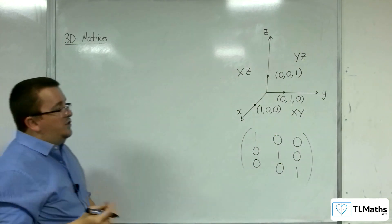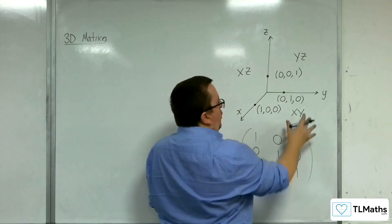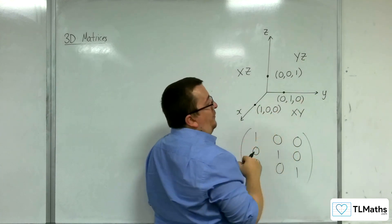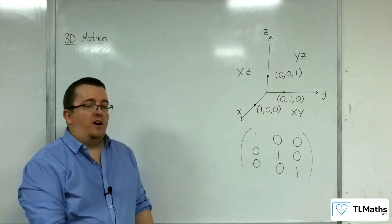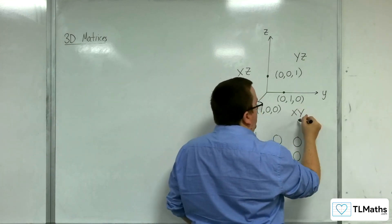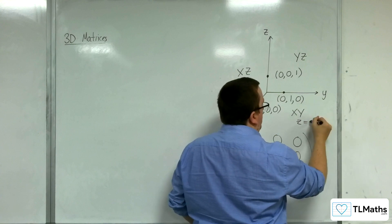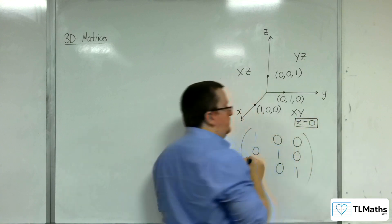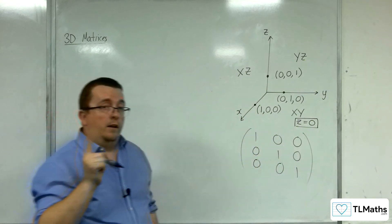Now, the thing to recognize is that on the xy plane, z is always 0. So on the floor, I'm at 0 height. The xy plane can also be referred to as z equals 0.